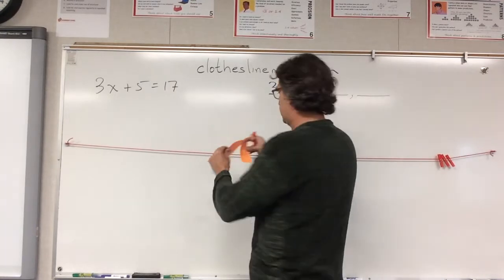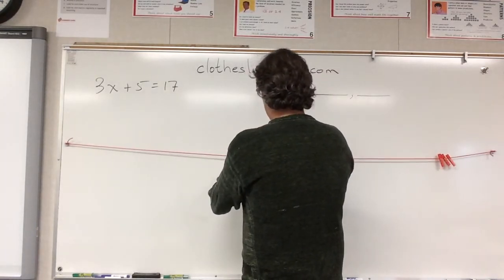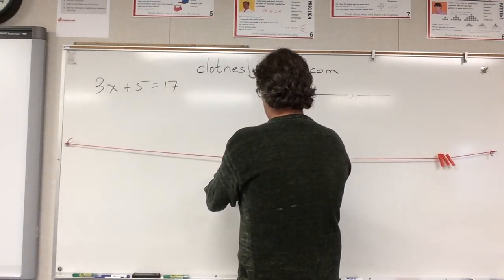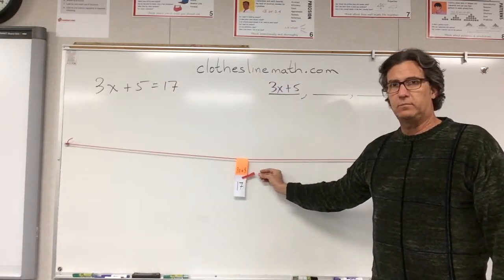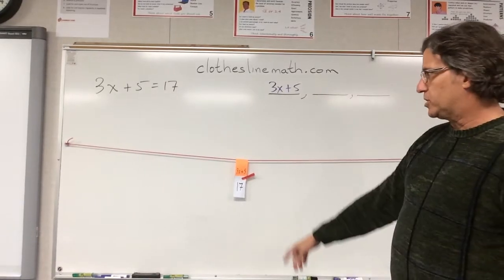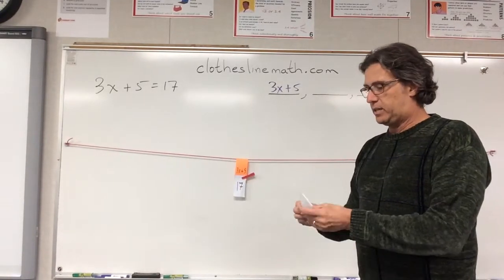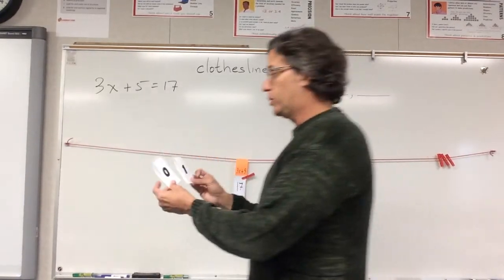Now we do that, once again, by showing with the clothespin equivalency. So those are equal. Now, it doesn't help us too much because we don't know what 17 is until we get the units. So we're going to need 0 and 1. So I'll place those for the kids.